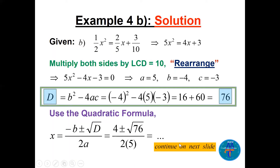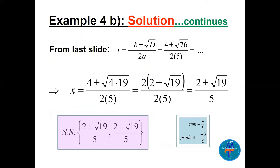Continuing from the last slide with D equals 76: the quadratic formula gives x equals minus b, which is 4, plus or minus square root of 76, divided by 10. Since 76 equals 4 times 19, we can take 2 outside the radical to get 2 times square root of 19. Canceling the common factor of 2 gives x equals 2 plus or minus square root of 19, all over 5.